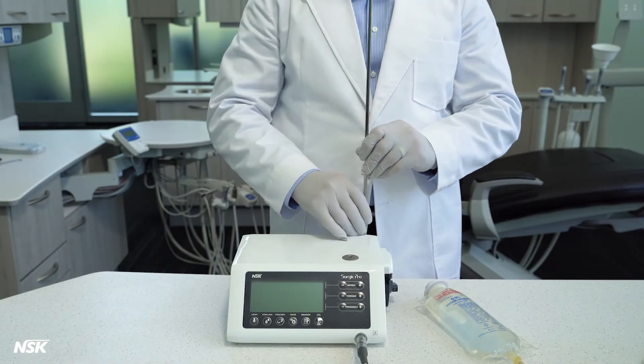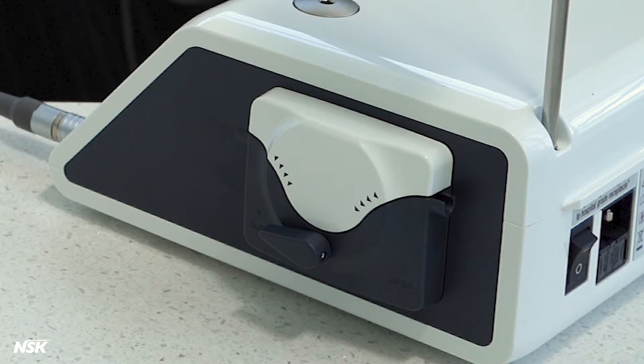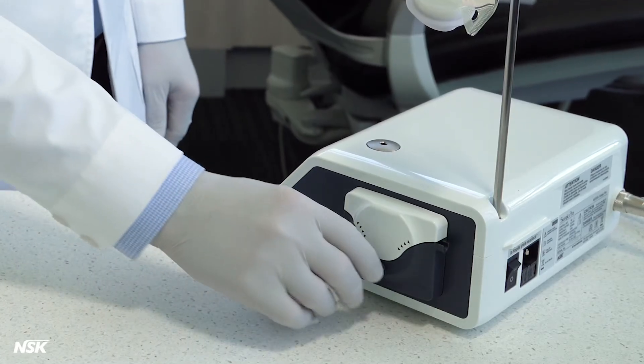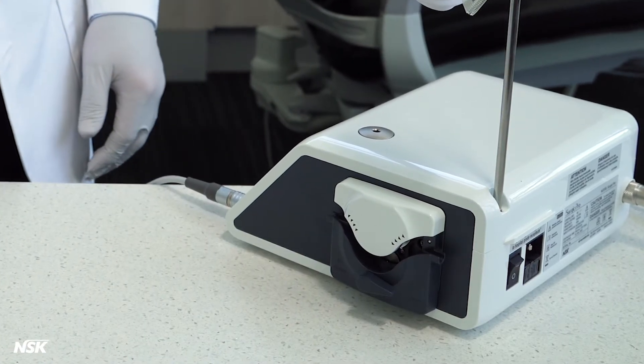Next, mount the coolant solution hanger post and hang the saline bag. To install the irrigation tube, be sure the lever of the pump is turned to open and the needle end of the tubing is facing toward the back of the unit.